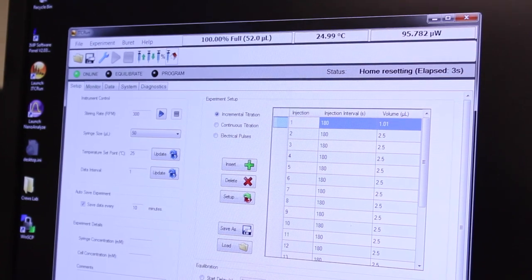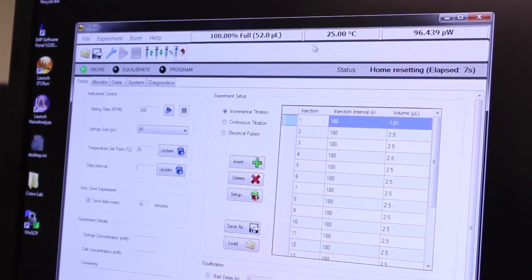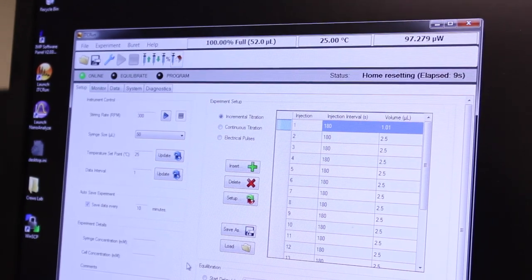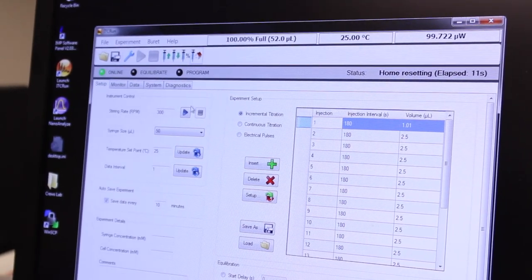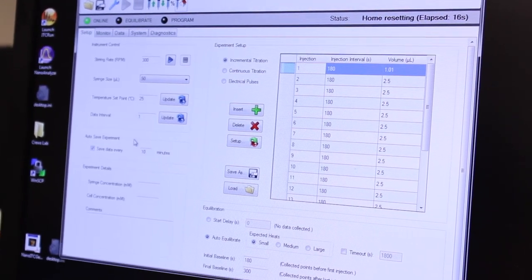This will allow the instrument to continue equilibrating so that the temperature will be more stable and equilibrated for the next user. If you don't leave the program running it will not be actively equilibrating and regulating the temperature and it will take significantly longer to achieve a stable baseline for the next user.